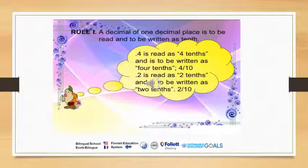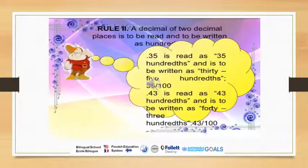A decimal of one decimal place is to be read as tenths. For example, if you have 0.4, this is read as four tenths. Also, 0.2 can be read as two tenths.